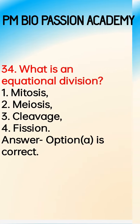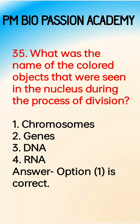What was the name of the colored objects that were seen in the nucleus during the process of division — chromosomes, genes, DNA, or RNA? The answer is very obviously option number one — chromosomes.